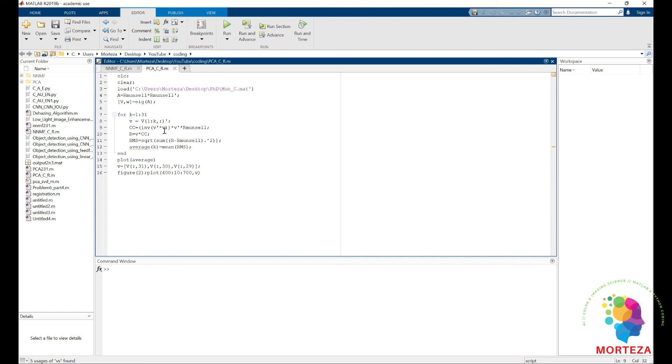So I compress the 31 values to just three values for each 1269 samples in my data set, which is Munsell. And then I reconstruct them again and I calculate the error of reconstruction. And I show the average and at the end, I also show the first three most important eigenvectors, which are corresponding to the highest value of eigenvalues, which is W.